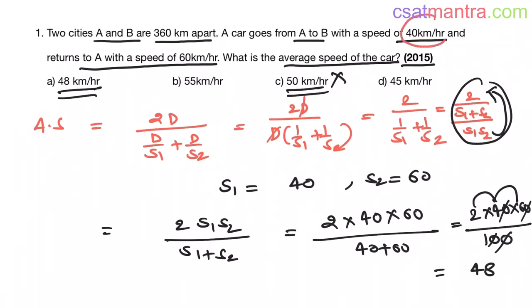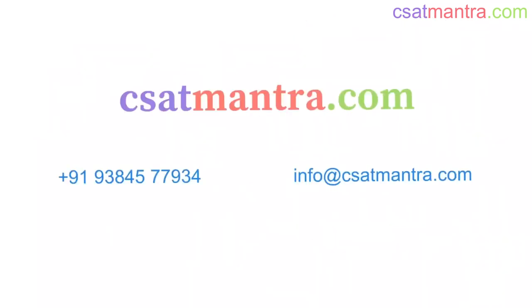Rather than traveling at 40 kilometers per hour from A to B and 60 kilometers per hour from B to A, it can travel at 48 kilometers per hour from A to B and B to A to complete the total distance, that is 720 kilometers, in the same time. To know more about the course, please visit csatmantra.com. If you have any queries, feel free to call us or mail us. Thank you.